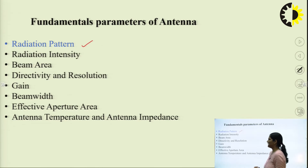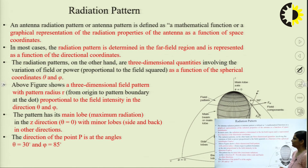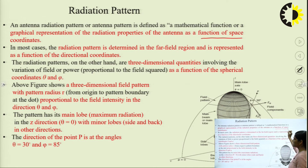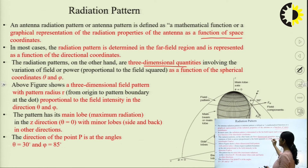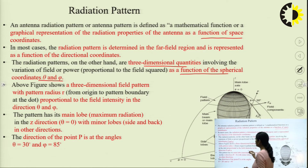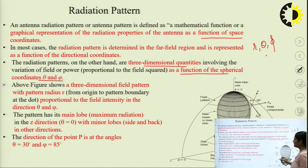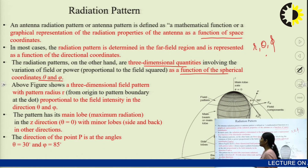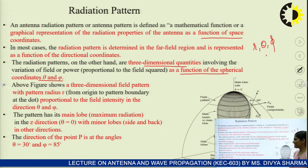First is the radiation pattern. The radiation pattern is defined as a graphical representation of radiation as a function of space coordinates, or as a function of directional coordinates. This radiation pattern is represented in three-dimensional form as a function of spherical coordinates. The spherical coordinates are R, theta, and phi. This pattern is a 3D field pattern and is proportional to the field intensity in the direction of theta and phi.